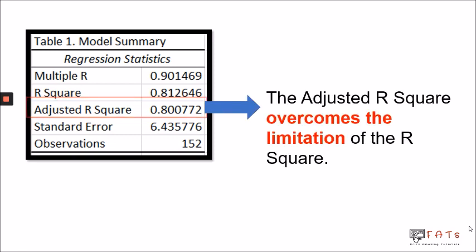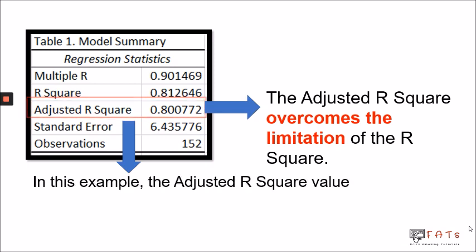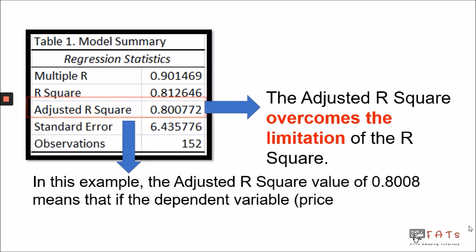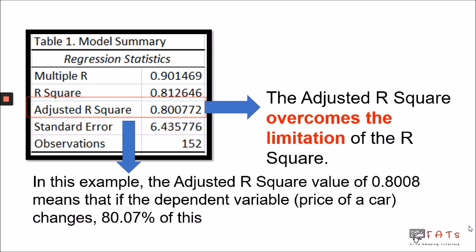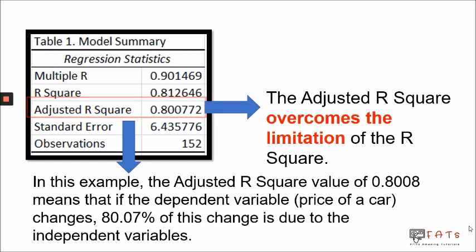That is why we are going to use the adjusted R-square value in our report to overcome the limitation of R-square. In this example, the adjusted R-square value of 0.8008 means that if the dependent variable changes, 80.07% of that change is due to the independent variables.